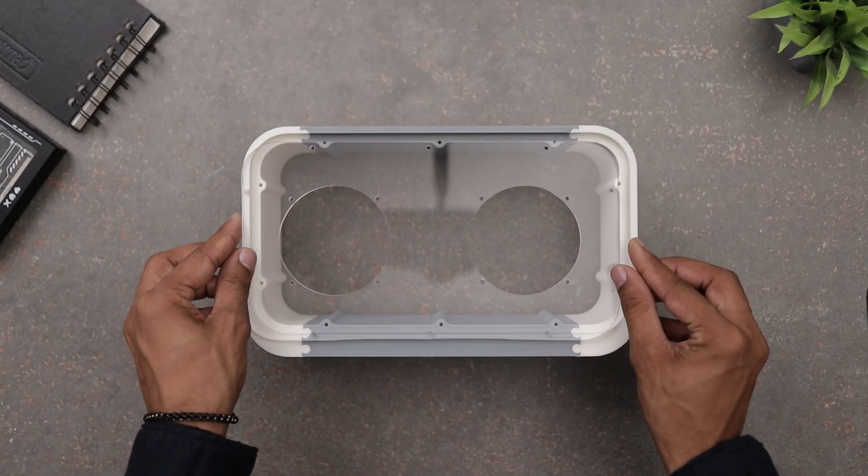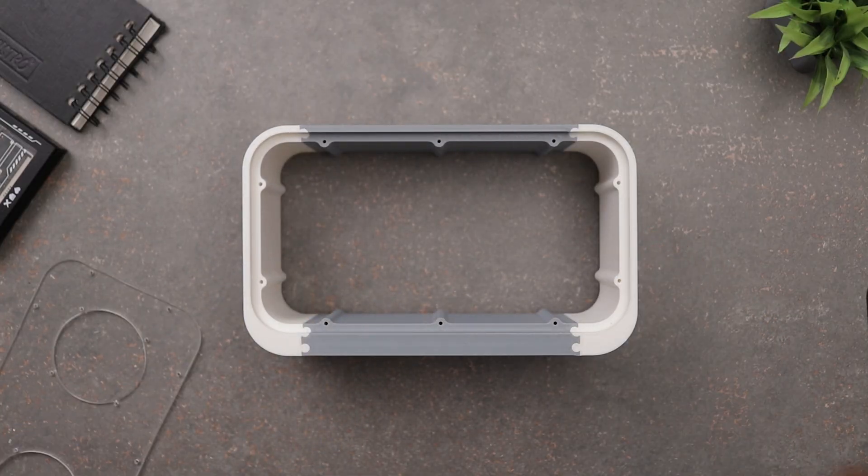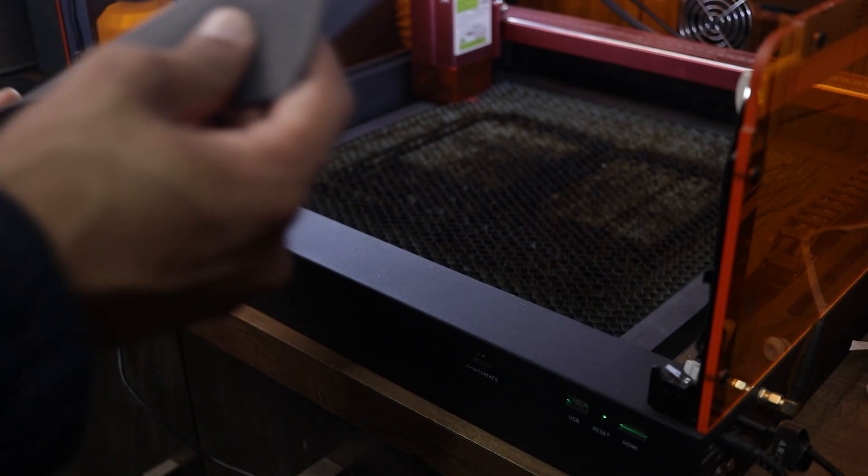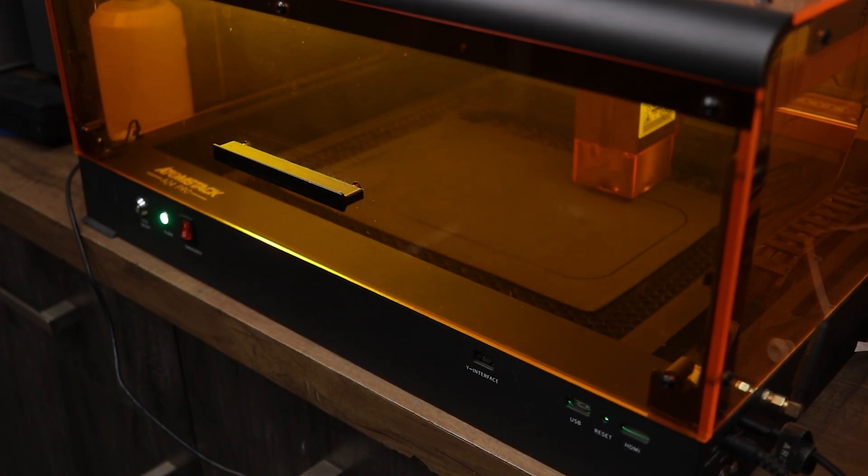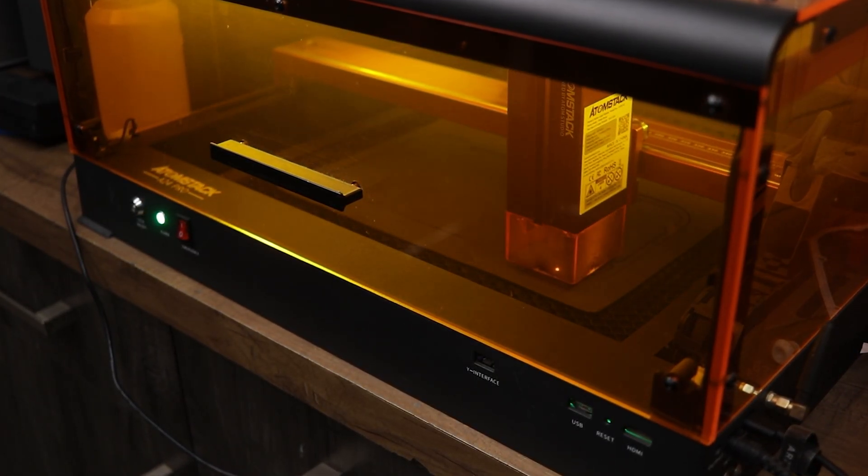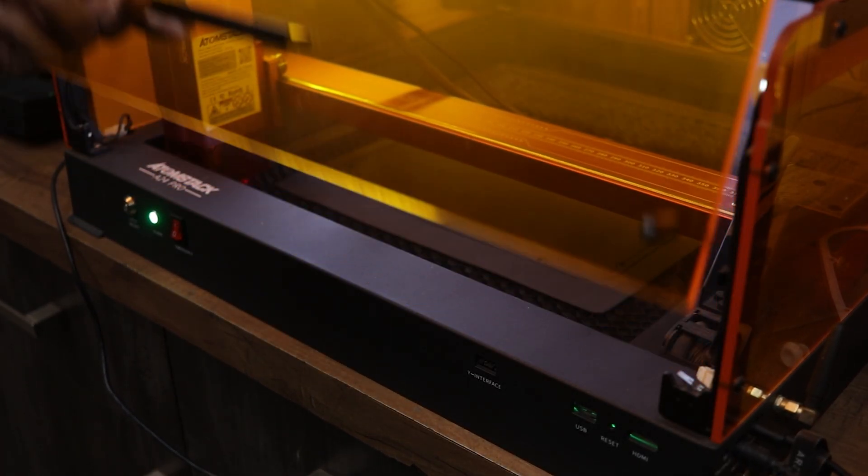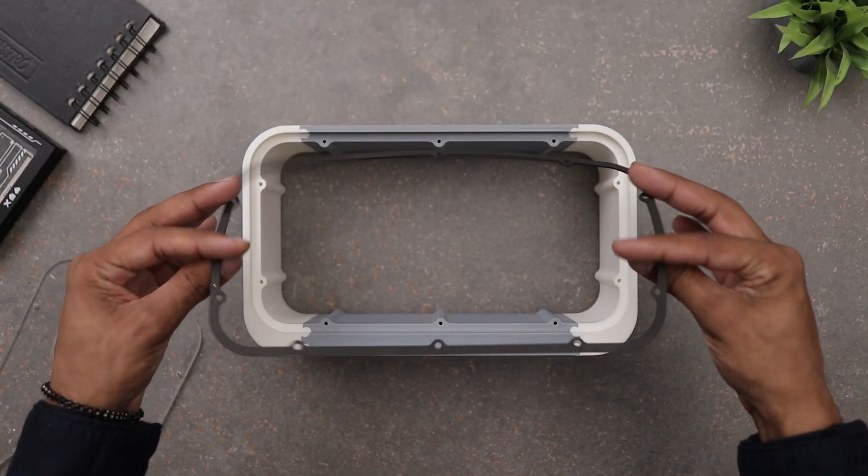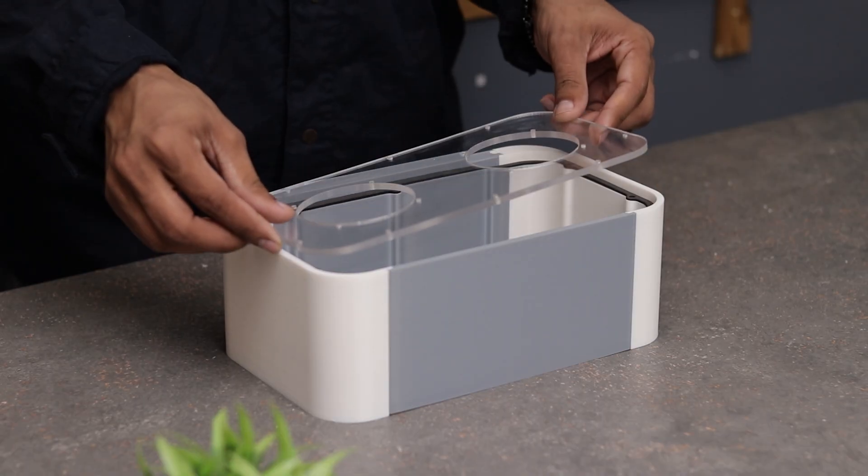This will go on the front but we need some foam or rubber padding to make the enclosure airtight. So I got this 1mm foam sheet from Amazon. I used my laser engraver to cut it. It turned out great, so let's install it and finish the enclosure.